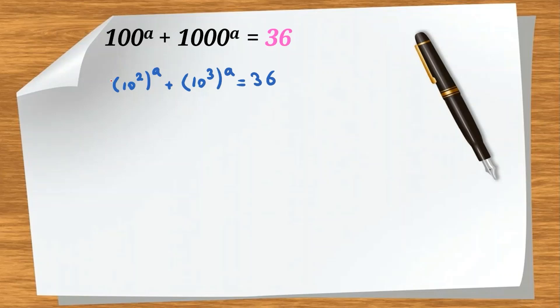Now, you should use a basic rule in powers that x to the m to the n equals x to the m times n. You can switch m and n. Now, we can switch 2 and A here: 10 to the A to the 2 plus 10 to the A to the 3 equals 36.